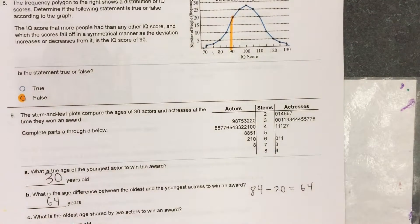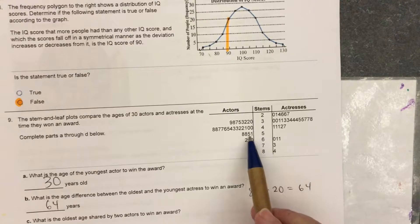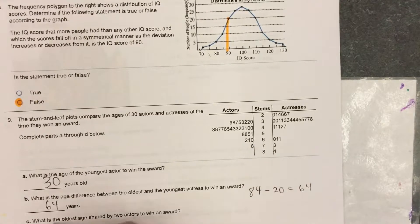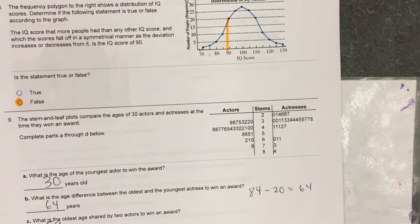Part C. What is the oldest age shared by two actors? 58. There were two actors who were 58 when they won the award.